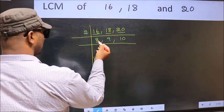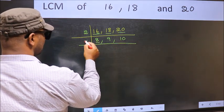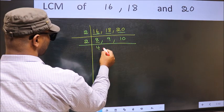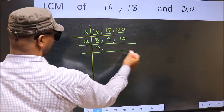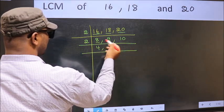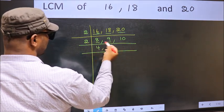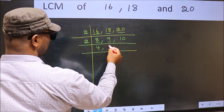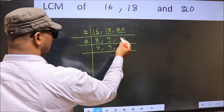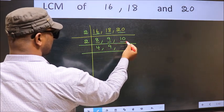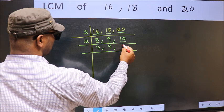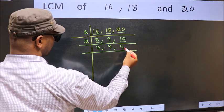Now here we have 8. 2 times 4 is 8. The other number 9 — not divisible by 2, so you write it down as it is. The other number 10 — when do we get 10 in the 2 table? 2 times 5 is 10.